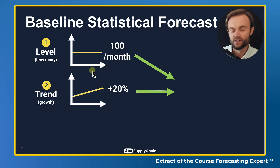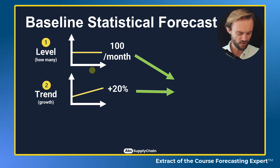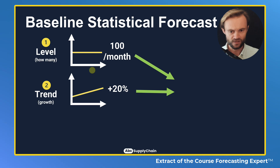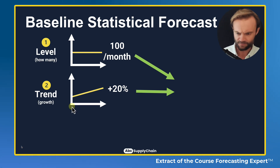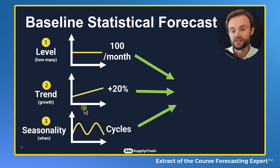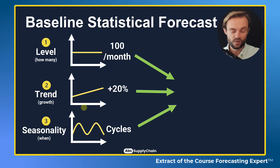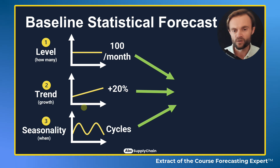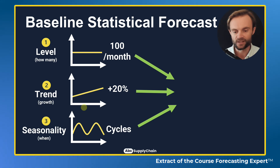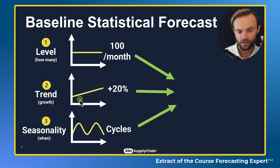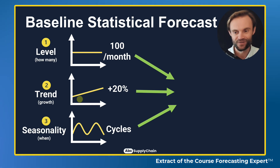Then I have a trend. The trend is — oh, I'm growing. This model is growing by maybe 10 or 20% versus last year, so I can increase my level. And then you have the seasonality. The seasonality is like the cycles that we repeat — we will have a specific episode on that. For example, I'm selling three times more iPhones in the last quarter because Christmas is coming than in the first quarter. These three pillars are very, very important to understand because this is the core of every forecast you have.